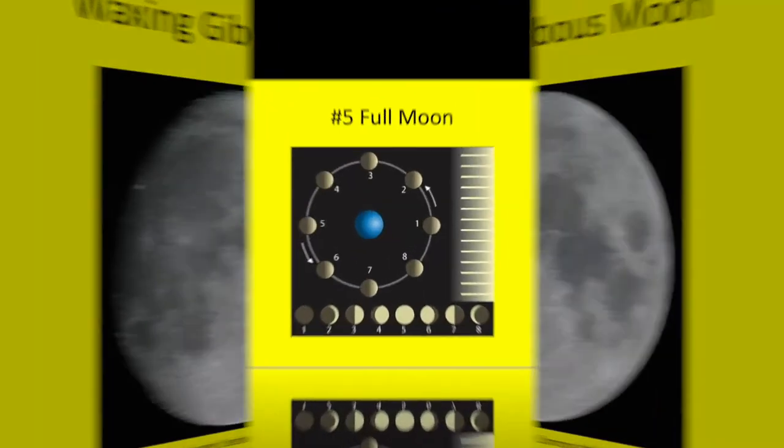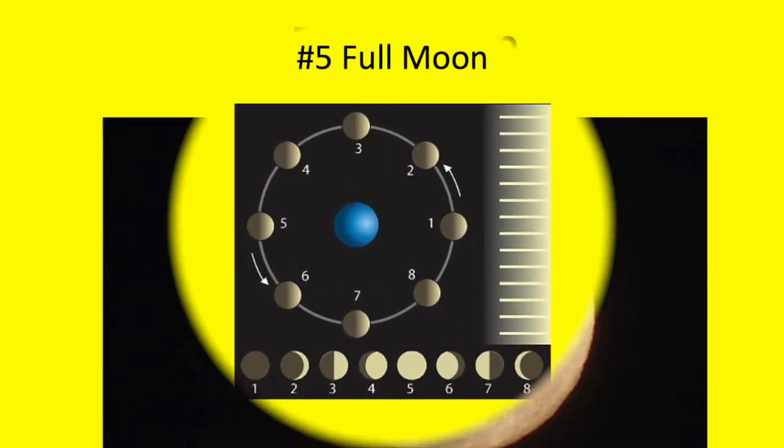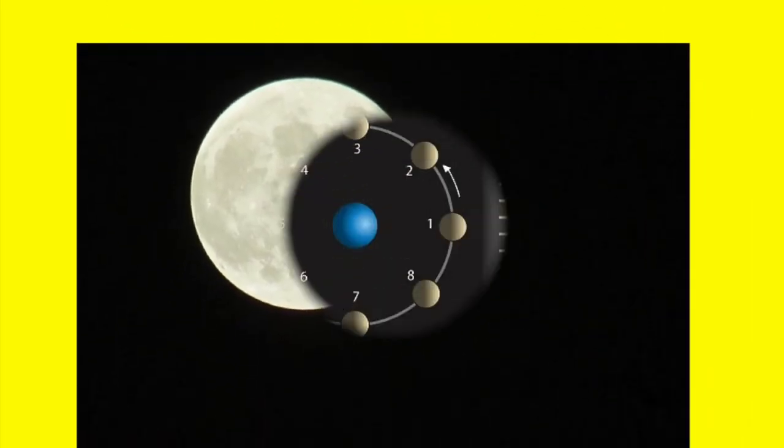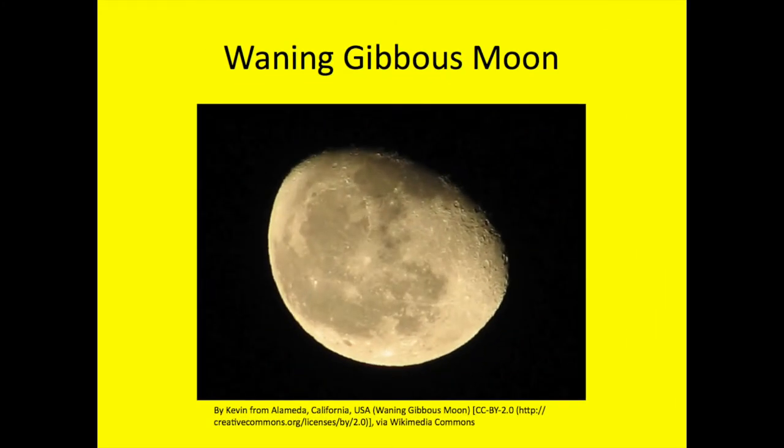When we see the entire moon from one side it is phase 5, the full moon. Following the full moon the moon wanes or grows thinner each night and we have phase 6, the waning gibbous moon.